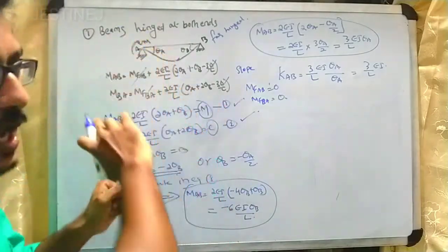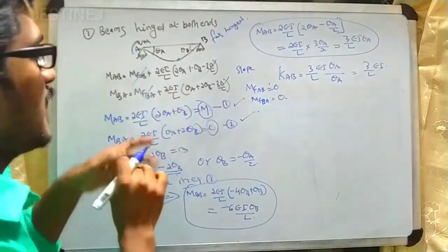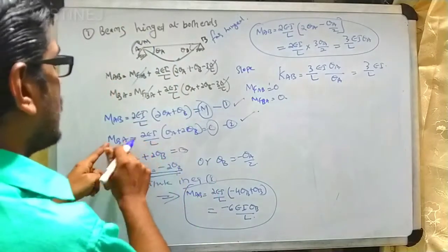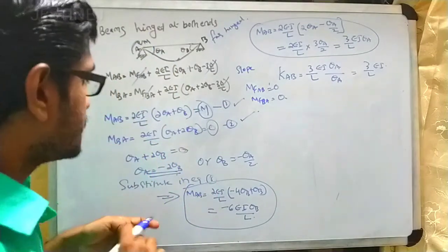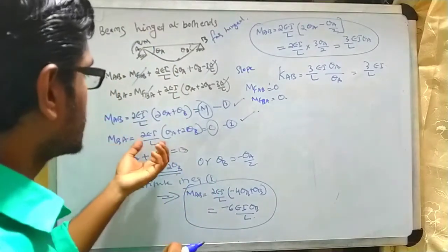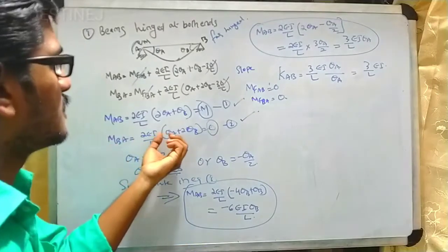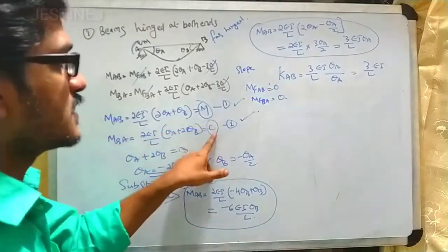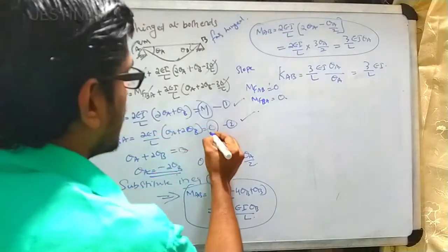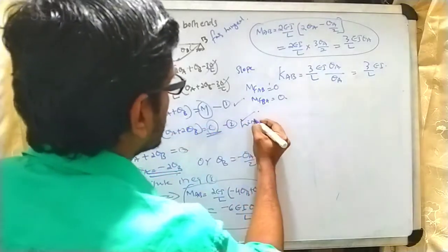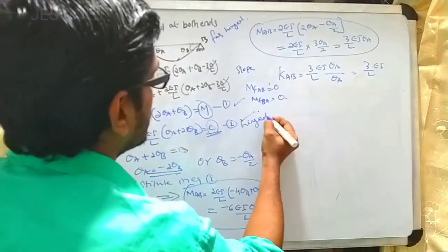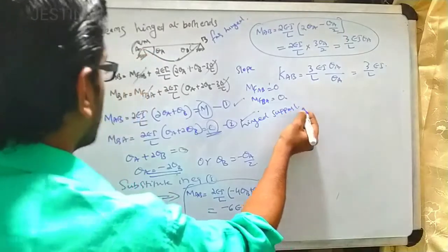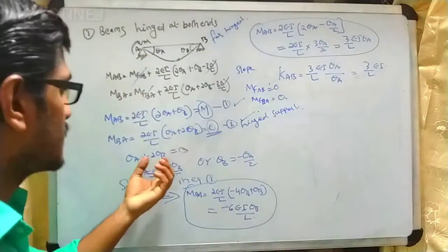For M_BA, the equation gives (2EI/L)(θ_a + 2θ_b) = 0, because at the hinged support the moment is zero.